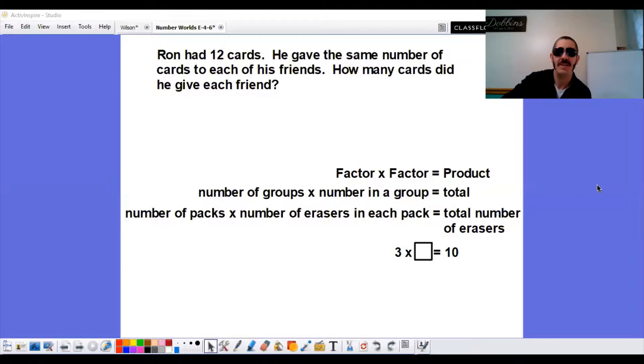We're going to get right on into it. And it's going to look really similar to what I think Lesson 2 started with. So we have a word problem. Ron had 12 cards. He gave the same number of cards to each of his friends. How many cards did he give each friend? Why is this a division problem? What in this sentence or question is making this a division problem?